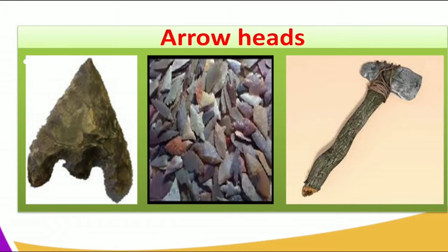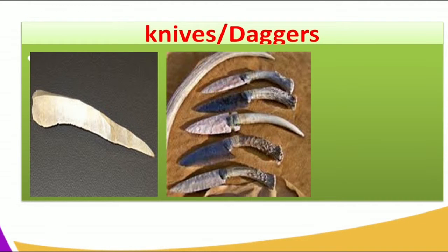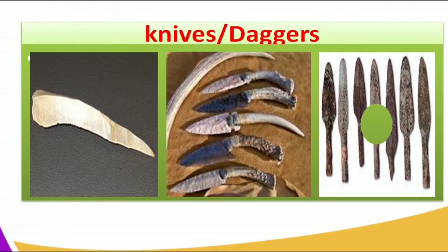The arrowheads were many and were fitted on wood to become composite tools. Other examples include knives and daggers made of stones in this period. These were used for either cutting or for security reasons.